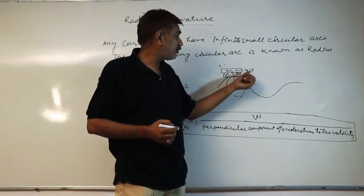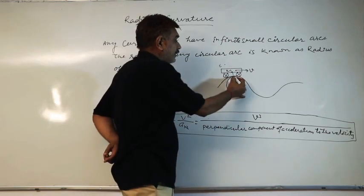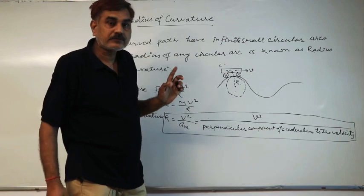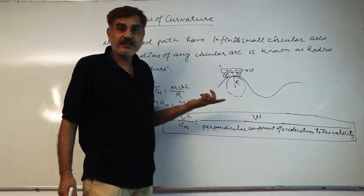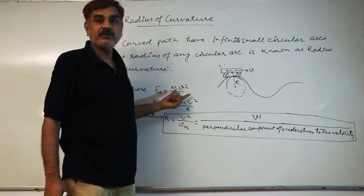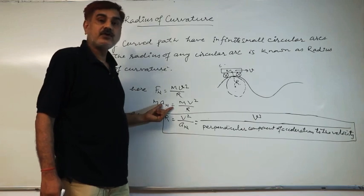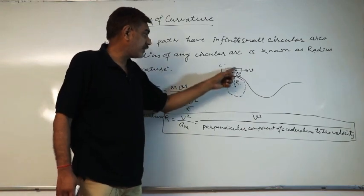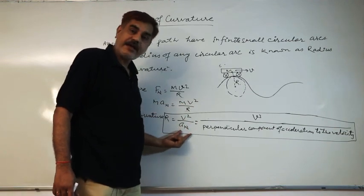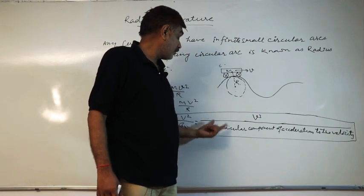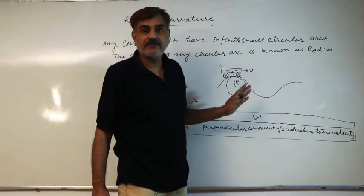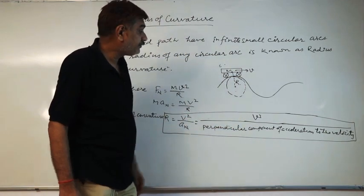Suppose a car is moving with velocity V at the topmost point A. At point A, we need to find the radius of curvature. Centripetal force is the normal force directed towards the center, and we know centripetal force equals MV²/R, which equals mass times normal acceleration directed towards the center. Therefore, radius of curvature R = V² / a_normal, that is, velocity squared upon the perpendicular component of acceleration to the velocity.